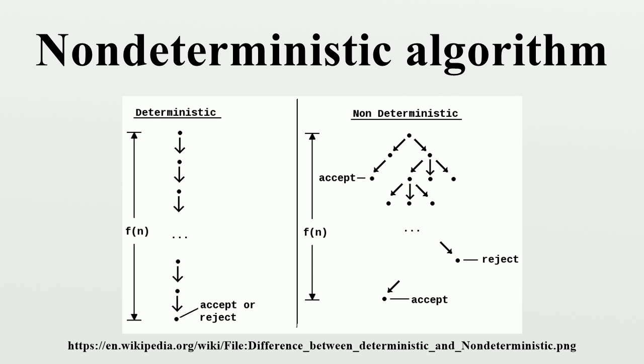There are several ways an algorithm may behave differently from run to run. A concurrent algorithm can perform differently on different runs due to a race condition. A probabilistic algorithm's behaviors depends on a random number generator. An algorithm that solves a problem in non-deterministic polynomial time can run in polynomial time or exponential time depending on the choices it makes during execution.